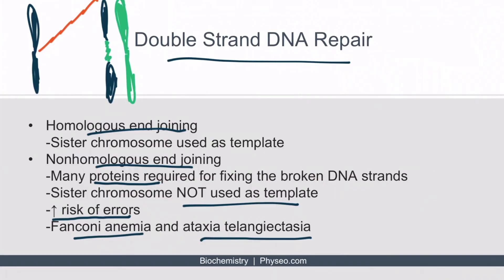Fanconi anemia is a hereditary form of anemia commonly associated with aplastic anemia. Ataxia telangiectasia is a hereditary immunodeficiency also associated with spider angiomas and cerebellar defects.